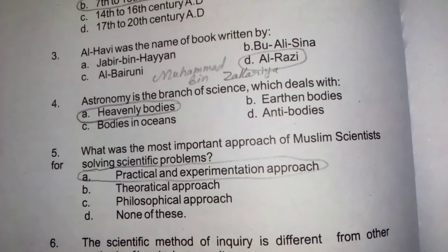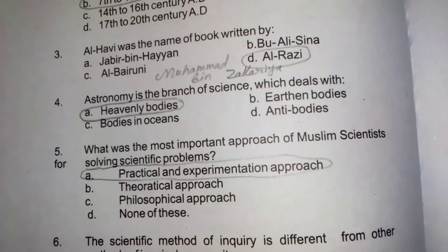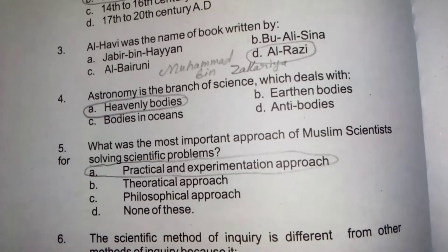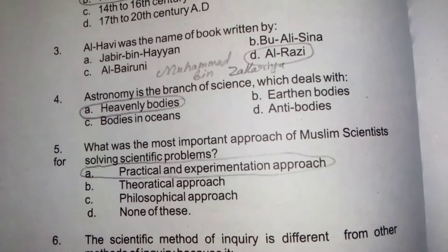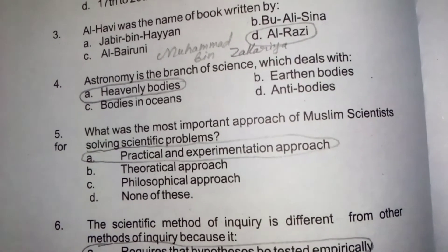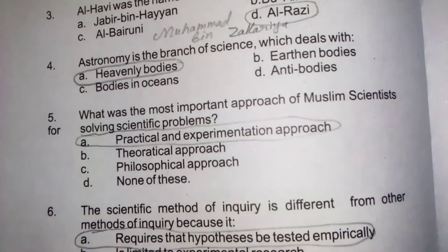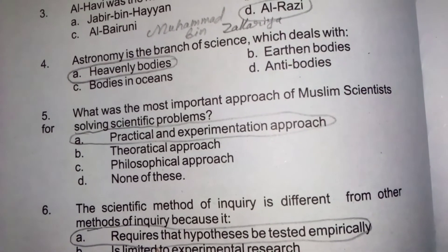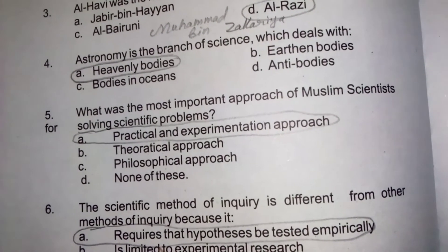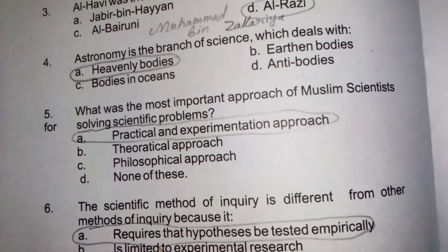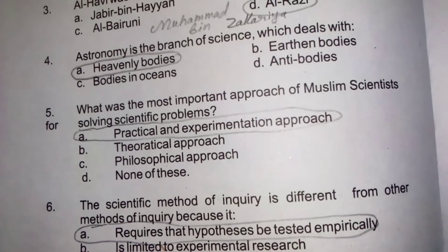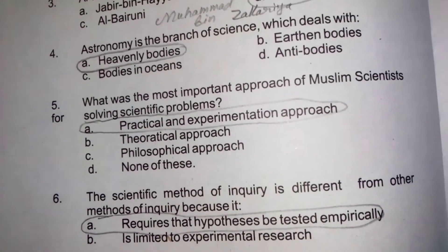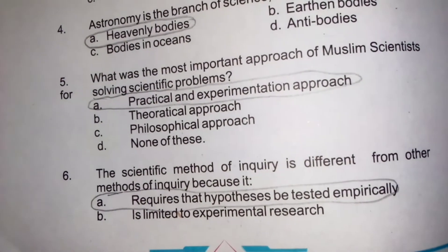Astronomy is the branch of science which deals with heavenly bodies. What was the most important approach of Muslim scientists in solving scientific problems? Their approach was practical and experimentation-based.